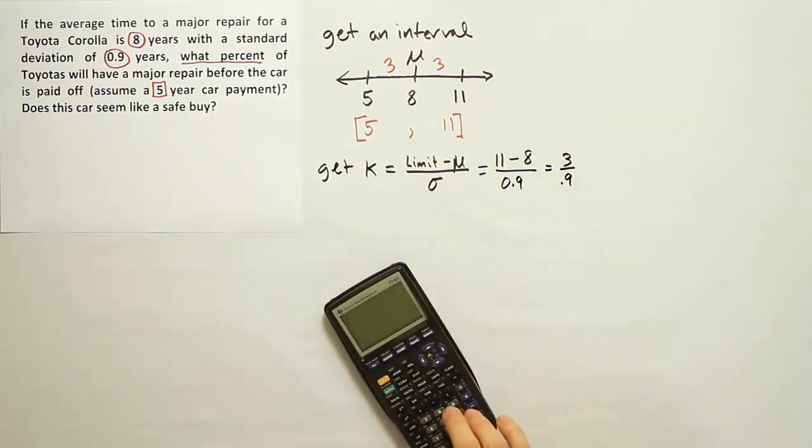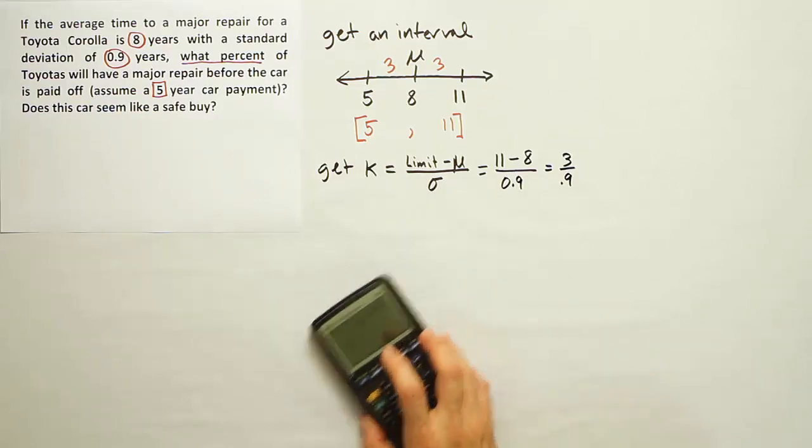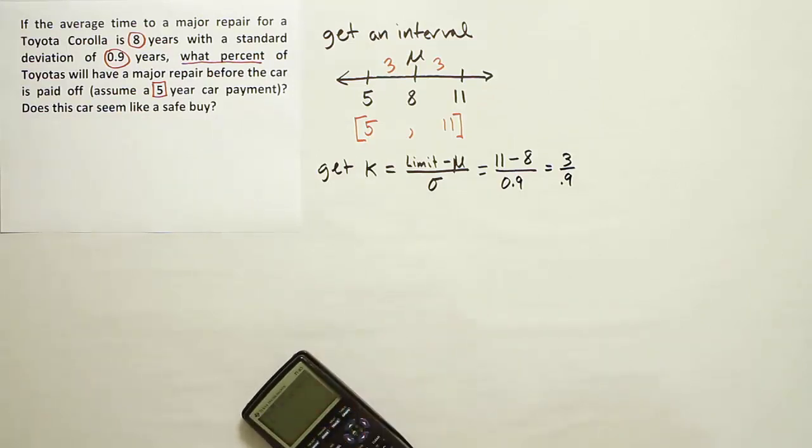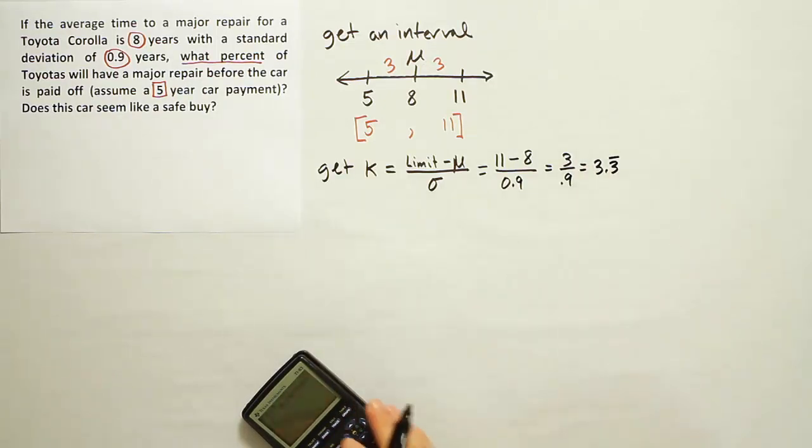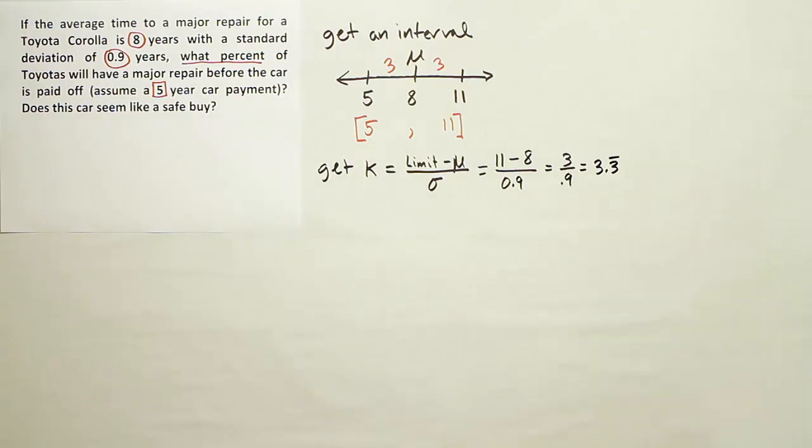That's going to give us 3 divided by 0.9. Okay, so let's see what we get when we do that. 3 divided by 0.9 gives us 3.3 repeating. 3.3 repeating, so a bunch of 3s after that decimal place.